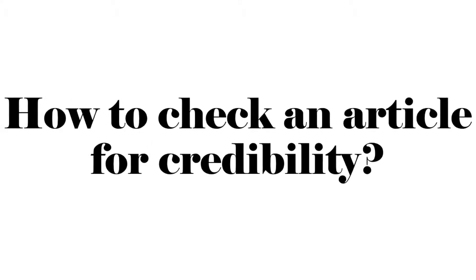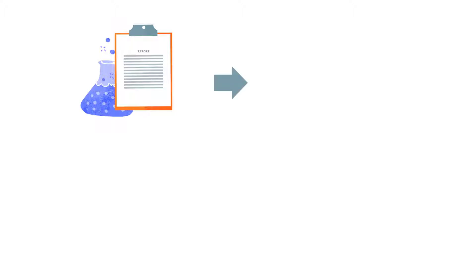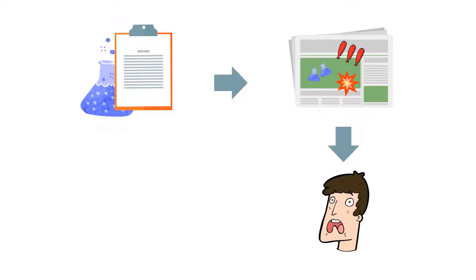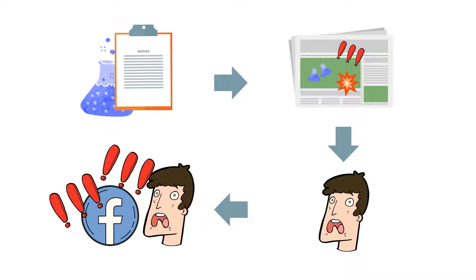In this video, I will show some strategies for checking information in an online article for credibility. Misinformation grows when a source of information, say a research study, is presented in the media in incomplete form or with a misplaced focus. This is especially true when the information touches a controversial subject or the publisher uses hyperbolization, since readers tend to interpret the publication using their emotional response and forget to check the story for credibility. Sharing an emotional interpretation of the story on social media perpetuates misinformation.